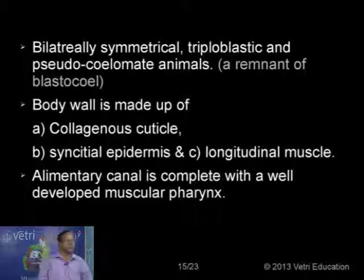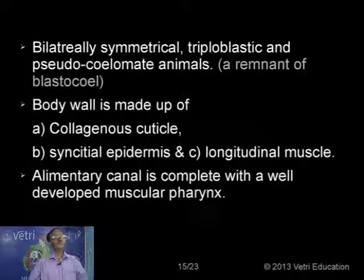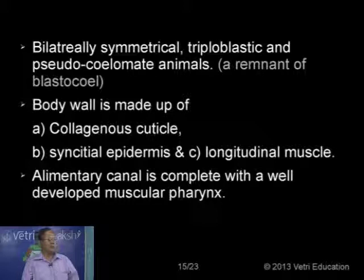Now let's proceed further. This is the general category starting from flatworms up to the arthropods — they have bilateral symmetry. The animals are diploblastic. One peculiar character for these animals: there is no true coelom present, hence these animals are considered as pseudocoelomate animals.